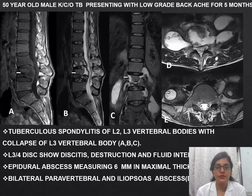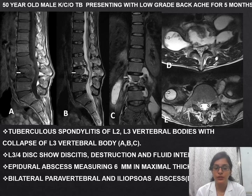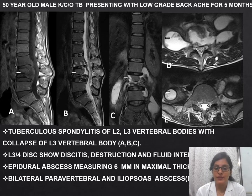First case: a 50-year-old male, known case of tuberculosis, presented with low-grade backache for 5 months. MRI shows tuberculosis spondylitis of L2 and L3 vertebral bodies with collapse of the L3 vertebral body. There is discitis, disc destruction and fluid intensity within the disc, an epidural abscess measuring 6 mm in maximal thickness, and bilateral iliopsoas abscess.